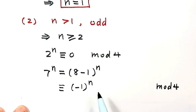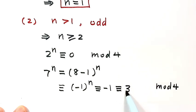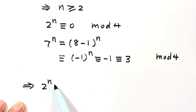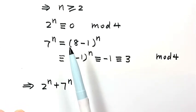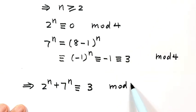Because n is an odd number, the remainder when dividing 7 to the power n by 4 depends on the last term of the expansion, which is negative 1 to the power n, giving remainder negative 1, which is the same as remainder 3. So 2 to the power n plus 7 to the power n has remainder 0 plus 3, which equals 3, when divided by 4.